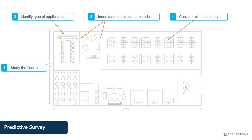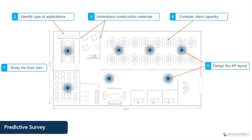In addition to coverage, it is important to consider client capacity needs by identifying the number of wireless clients and the type of applications they will be using, to understand how much bandwidth is required. Coverage and capacity are crucial to deciding how many APs will be deployed and where to place them. For example, three APs may be deployed in an area with many cubicles to reduce contention over the wireless medium.